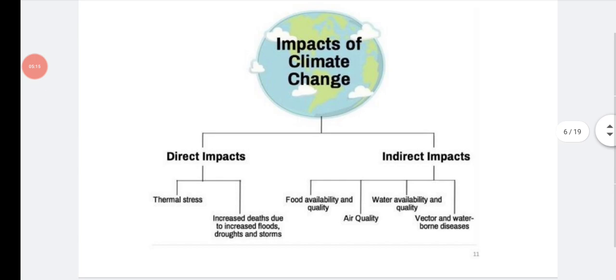So what are the direct and indirect impacts due to climate change? Under direct impacts, first one is thermal stress, second one is increased deaths due to increased floods, droughts and storms. And under indirect impacts, there is food availability and quality deficiency, decreased air quality, water availability and quality, vectors and waterborne diseases. So we will see one by one.